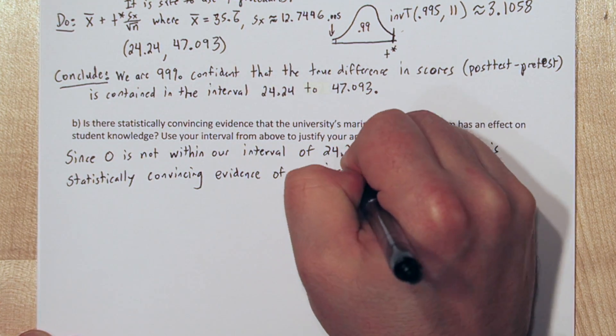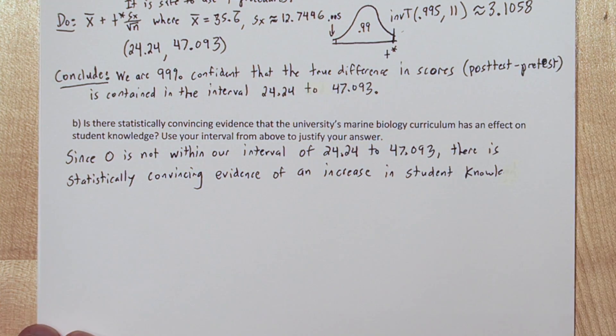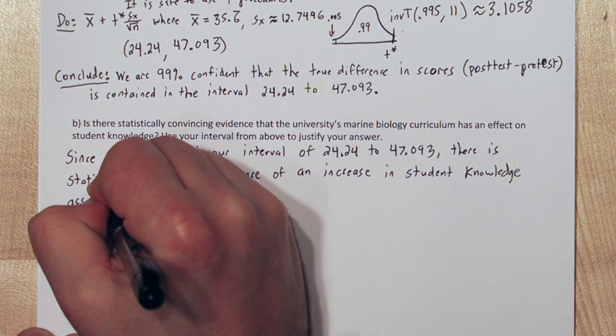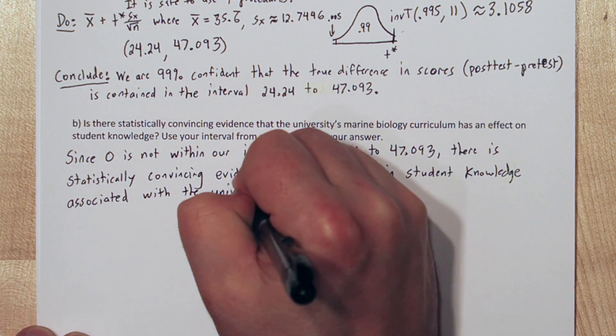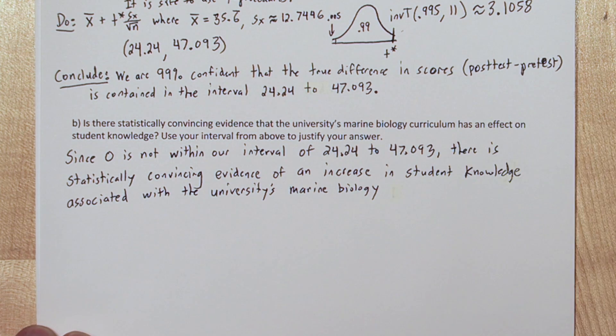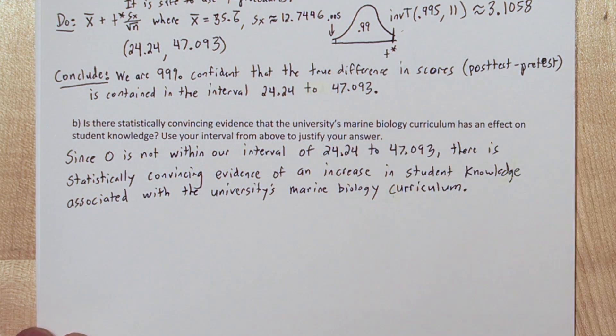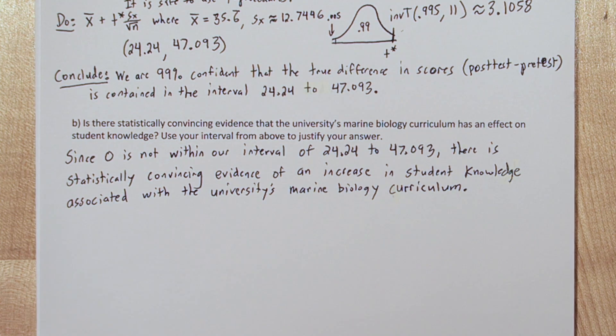That means we have strong evidence that the true difference in scores is positive. In other words, that the post-test scores are higher than the pre-test scores. So, we can say since 0 is not within our interval of 24.24 to 47.093, there is statistically convincing evidence of an increase in student knowledge associated with the university's marine biology curriculum.